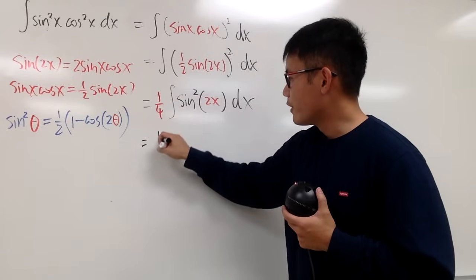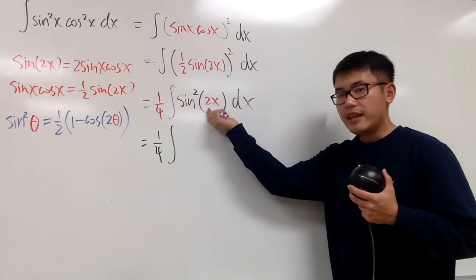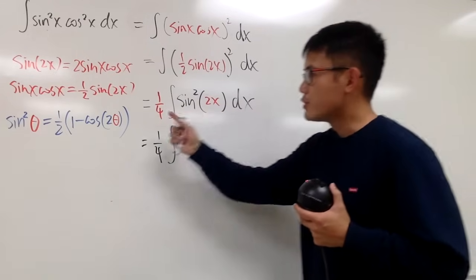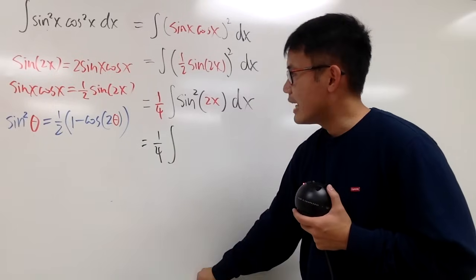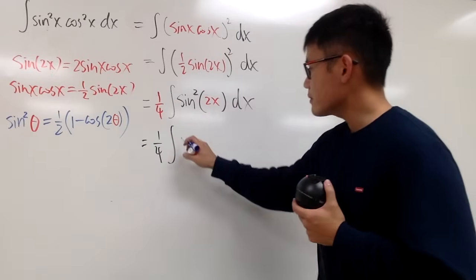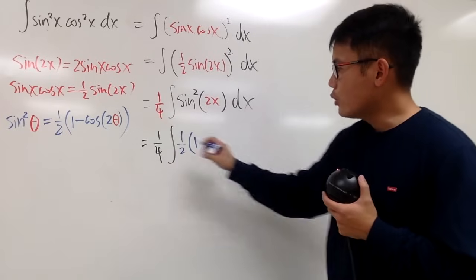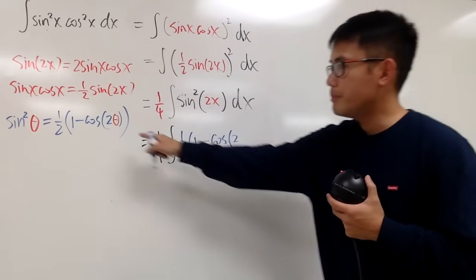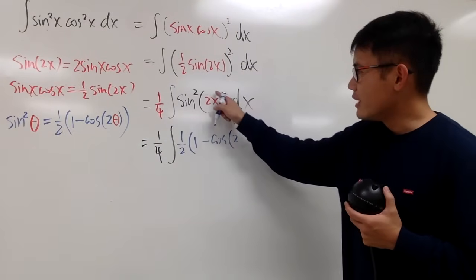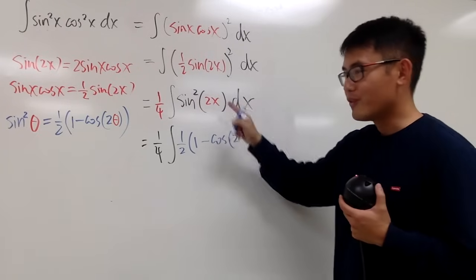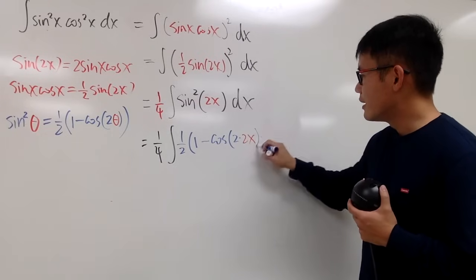So be sure you guys check them out. And now, we are going to use this formula right here to help us out with this part. So, we still have the 1 over 4 in the front. And now let's integrate. As you can see, the theta here is 2x. So I will just have to plug in 2x into the theta, right? So, what we will have is that we have that 1 half in the front right here. So let's put that down. Times 1 minus cosine. And then we have 2, right? Because this is from the formula.